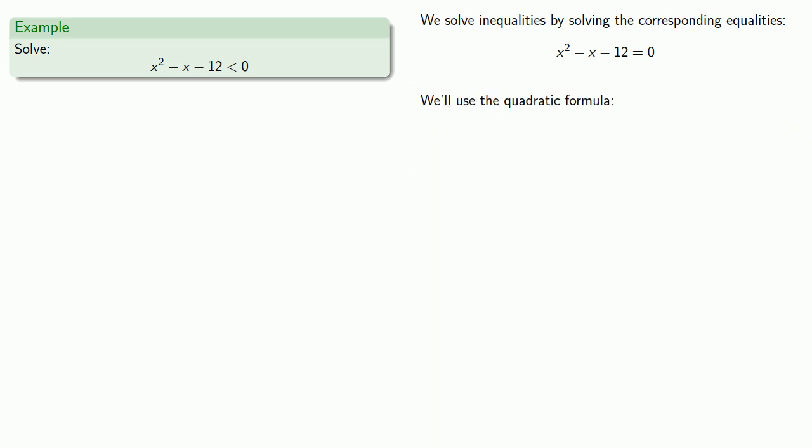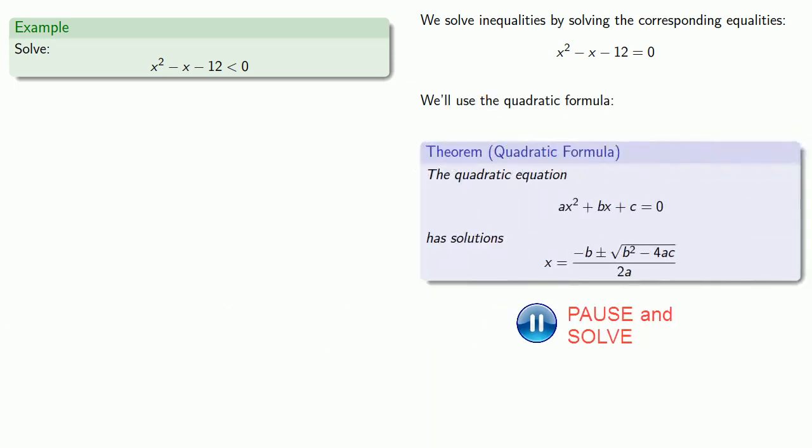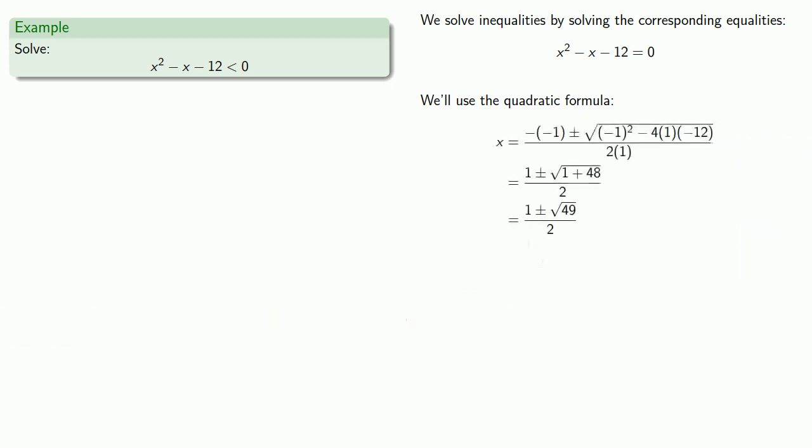So we'll go right to using the quadratic formula, which gives us our solutions 4 or negative 3. And if it's not written down, it didn't happen. Remember these solutions to the equality are what we call the critical values. And so we say that the critical values are x equals 4 or x equals negative 3.